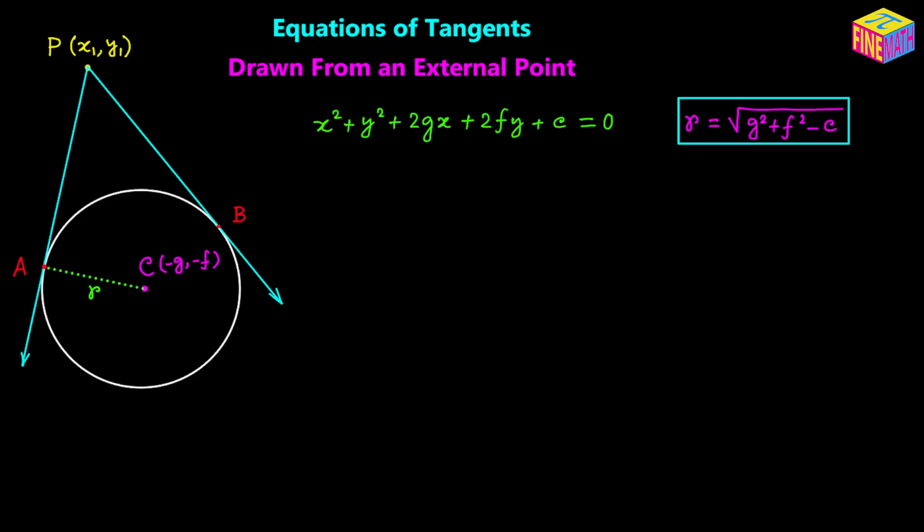The coordinates of point P are also provided, meaning x sub 1 and y sub 1 are known quantities. Now we need to find the equations of the tangent lines. The two tangents have two different slopes, so if we can calculate those slopes, we can write the equations since we already know point P lies on both tangent lines.